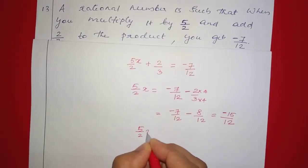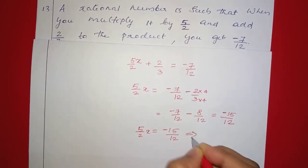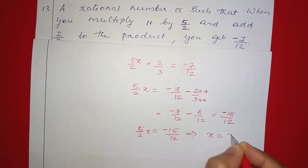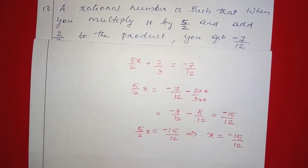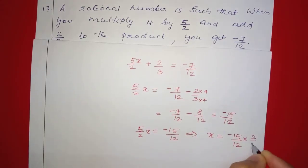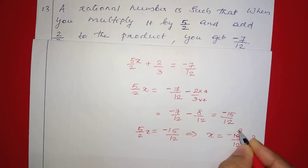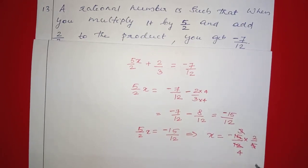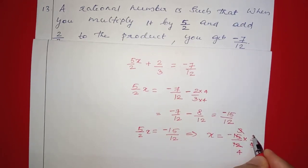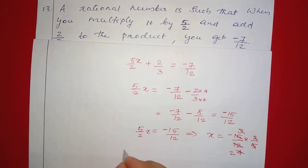So 5/2 x is equal to negative 15/12. Which implies x equals negative 15/12 multiplied by 2/5. Simplifying: 15 divided by 3 gives 5, 12 divided by 4 gives 3, 2 divided by 2 gives 1, and 5 divided by 5 gives 1. So x is equal to negative 1/2.